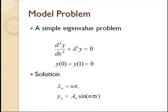So here's our model problem. It's a simple linear second-order ordinary differential equation: y double prime plus lambda squared y equals zero. Boundary conditions are homogeneous: y of zero equals y of one equals zero.